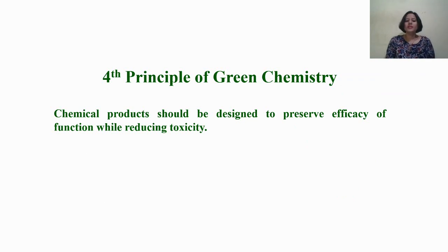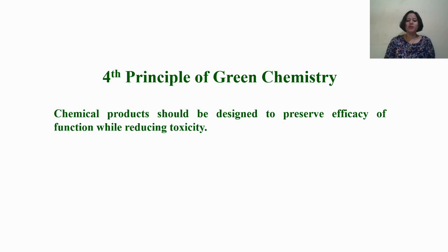Now let us come to the fourth principle of Green Chemistry. This principle states that chemical products should be designed to preserve efficacy of function while reducing toxicity. Whenever we are designing a chemical, we should preserve its function and utility, but it should be least toxic. If there is any functionality in the molecule which is causing toxicity, we should try to remove or change that moiety so that toxicity can be minimized.